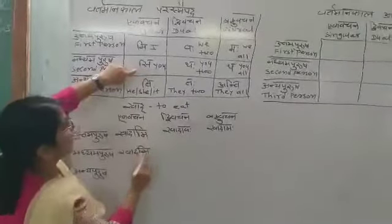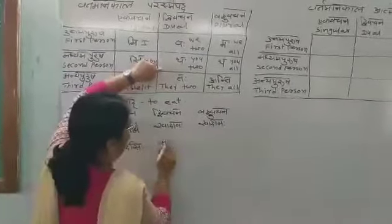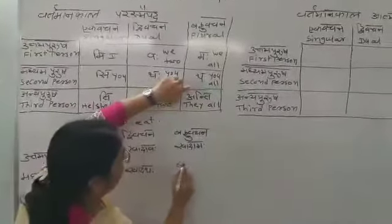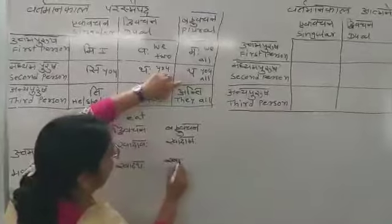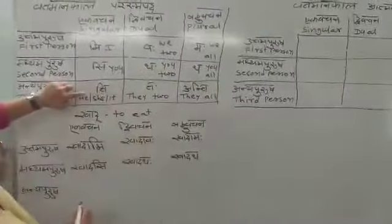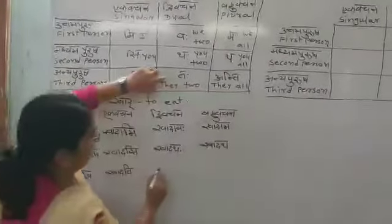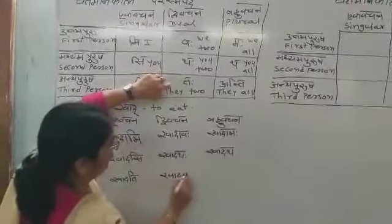The forms are: 'khadami' (I eat), 'khadavah' (we two eat), 'khadamah' (we all eat). For Madhyama Purush: 'khadasi' (only you eat), 'khadathah' (you two eat), 'khadatha' (you all eat). For Anya Purush: 'khadati' (he/she/it eats), 'khadatah' (they two eat), and 'khadanti' (they all eat).